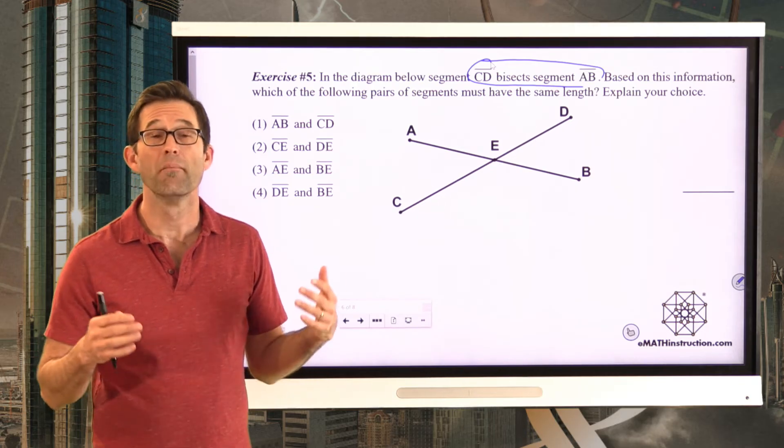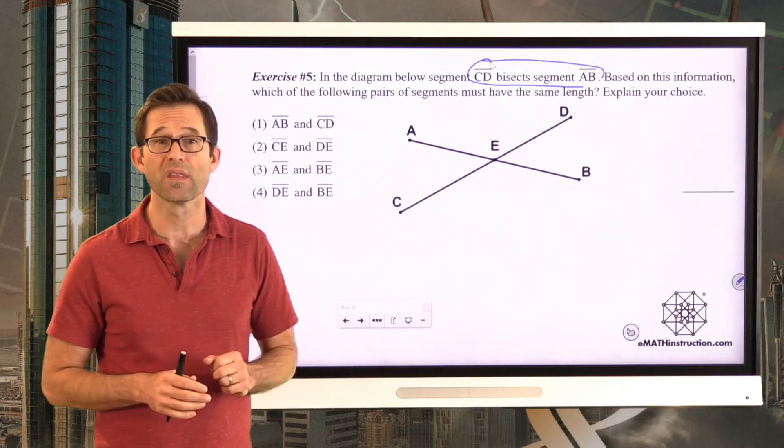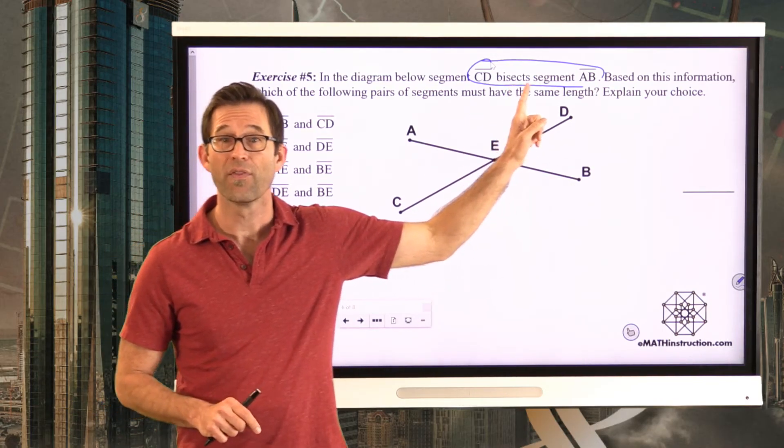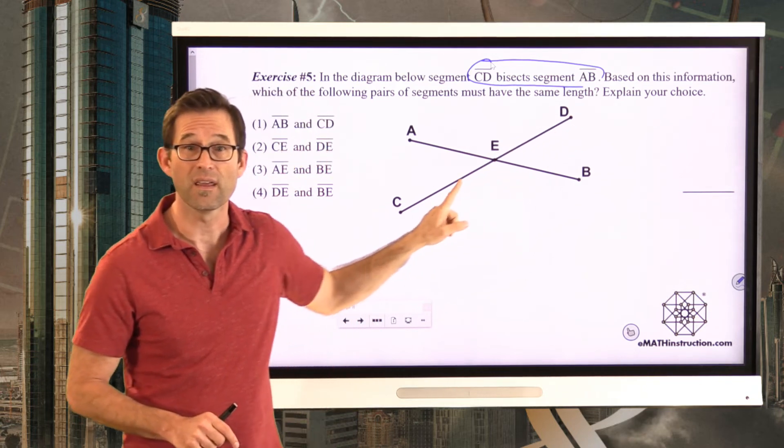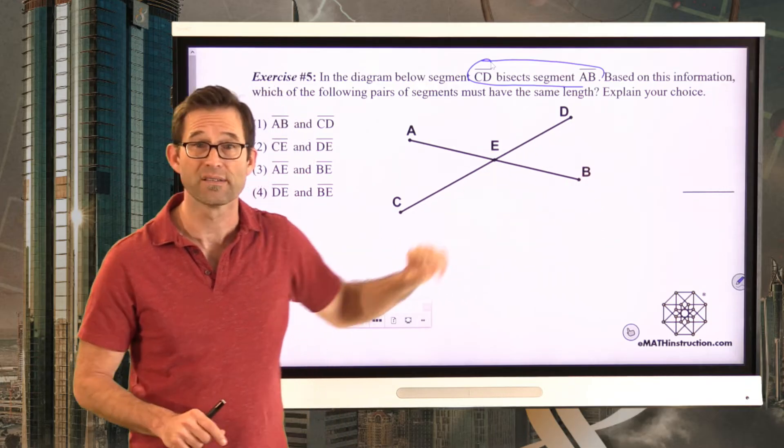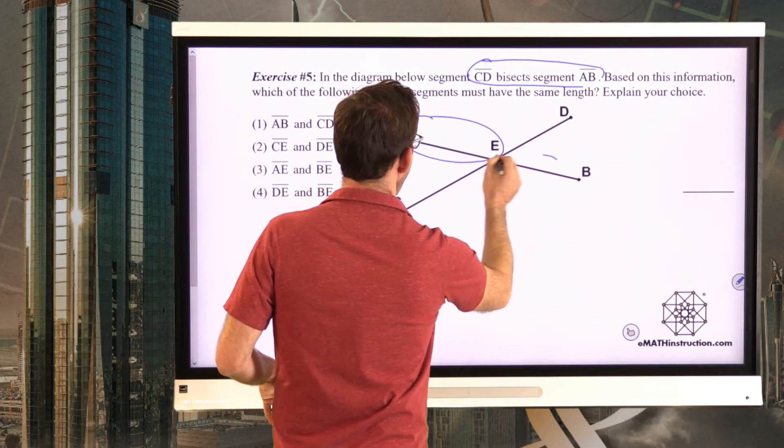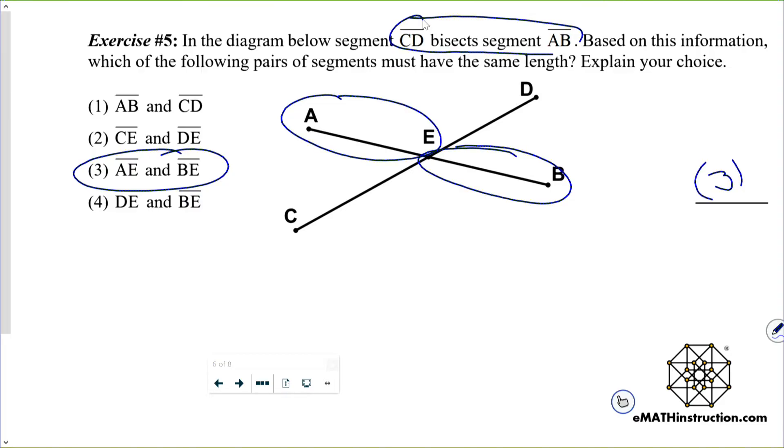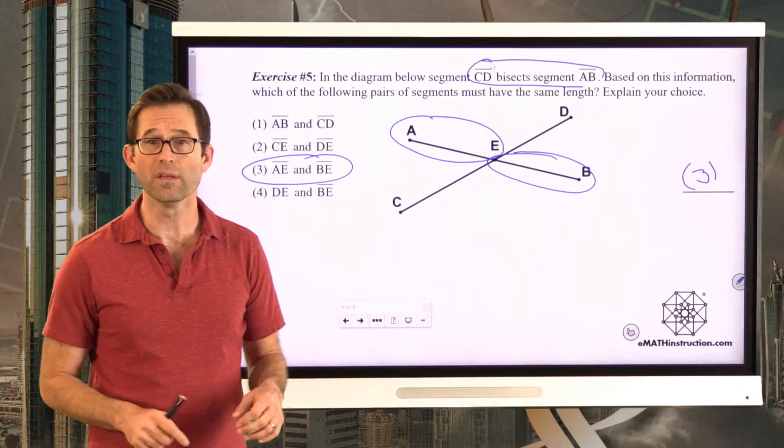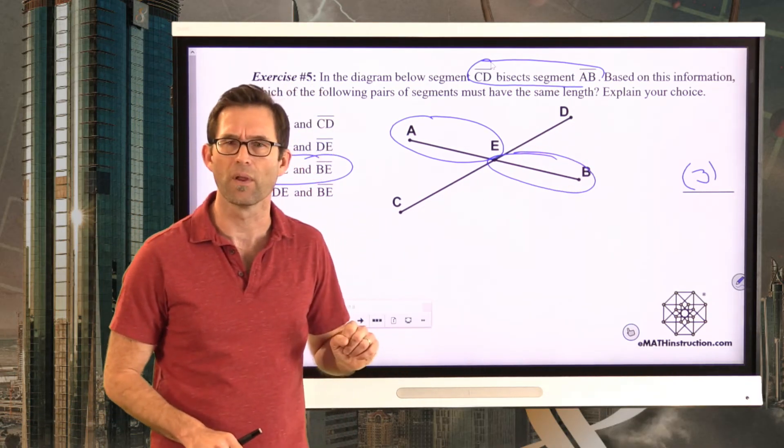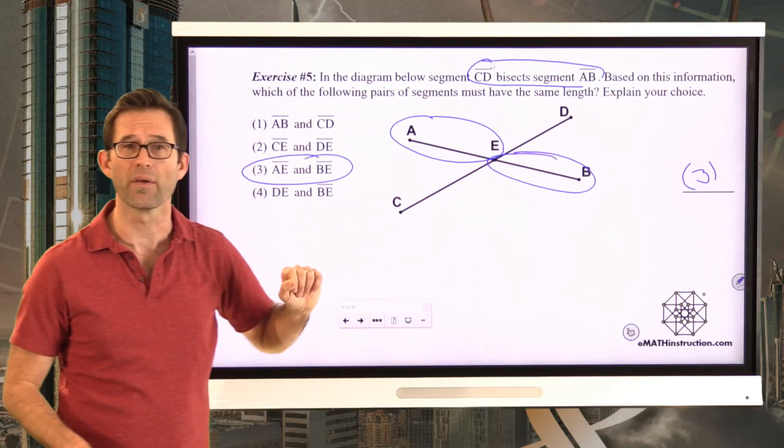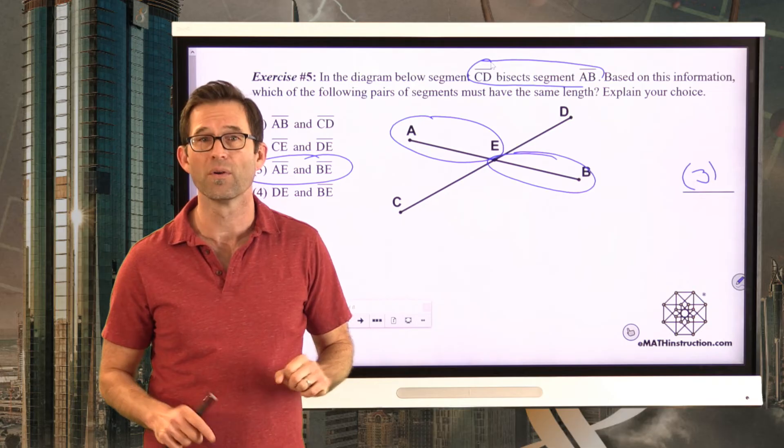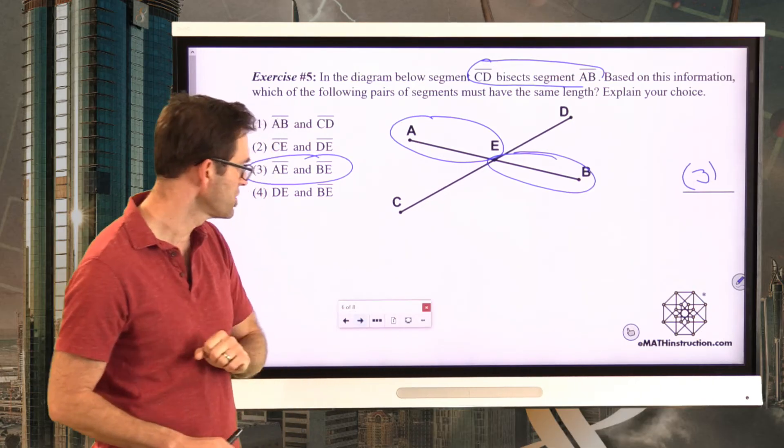Alright, this is key. Whenever you're bisecting a segment with another segment, it's like one segment is the knife and the other one is the loaf of bread that's being cut in half. Specifically, the thing that is bisecting is the knife and the thing that gets bisected is the thing that gets cut in half. CD is cutting AB in half. It's bisecting it. Which means that AE and EB or BE must be the same length. That's very important because when looking at this diagram, you could very easily be like, well, I think, I mean, CE and ED look like they're the same length. And maybe AE and DE look like they're the same length. But all we know for certain from this statement is that CD cuts segment AB into two equal sized segments.